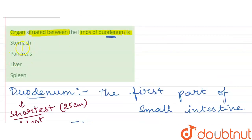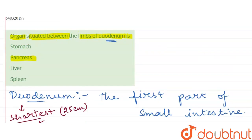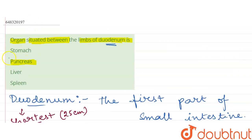So pancreas is the organ situated between the limbs of duodenum. So second option is the correct answer. Stomach, liver, and spleen—these three options are incorrect.